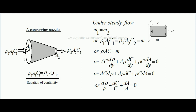At the exit, ρ2 is the density, A2 is the cross-sectional area, and C2 is the velocity. This can be understood by an example: suppose there is a hole or orifice through which some fluid is coming out with velocity C. The cross-sectional area of the fluid jet will be exactly equal to the cross-sectional area of the hole — just like when we squeeze a toothpaste tube, the toothpaste coming out has the same cross-section as the hole of the tube.